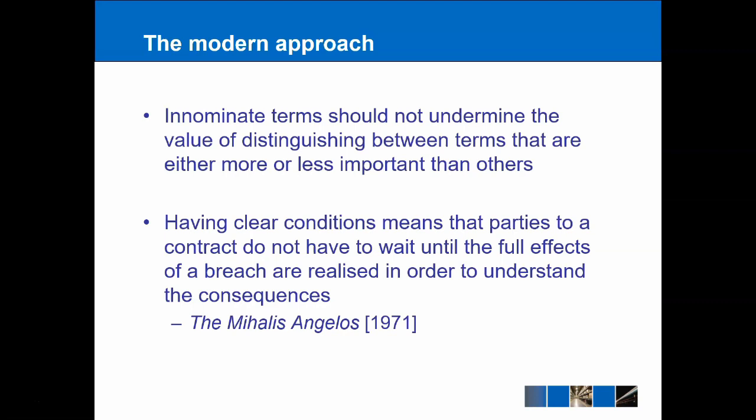This brings us to the more modern approach, which incorporates innominate terms. However, innominate terms on their own are not good enough — we still need the distinction between conditions and warranties. Having clear conditions and clear warranties means that a party to a contract doesn't have to wait until the effects of a breach are realised to understand the consequences. The court saw this in the Mahalis Angelos from 1971, where a ship delivered three weeks late was a clear breach of a condition — even if it might seem like an innominate term, it's important that the parties have that information in advance.